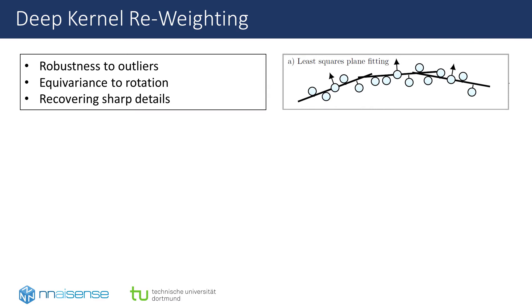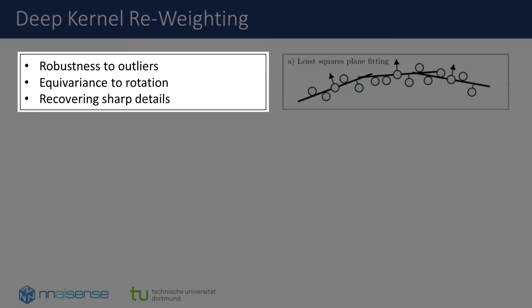Our approach combines those efforts in a single kernel function, achieving the desired properties of robustness to outliers, equivariance to local rigid rotational transformations, and the ability to recover sharp surface details in low noise scenarios.